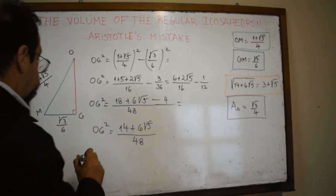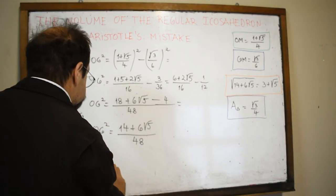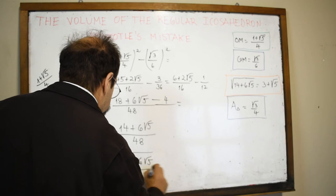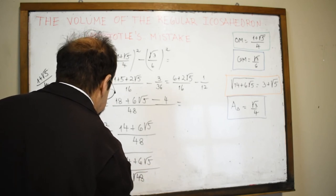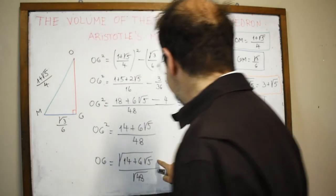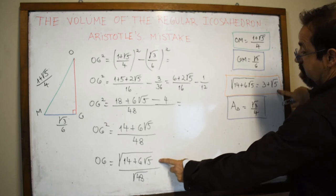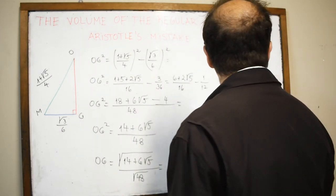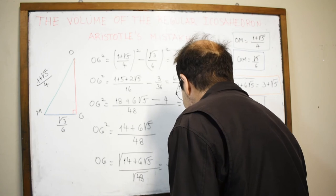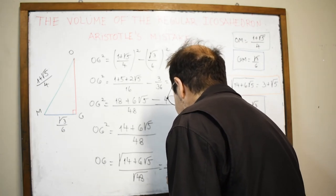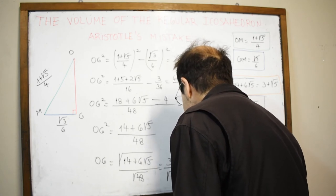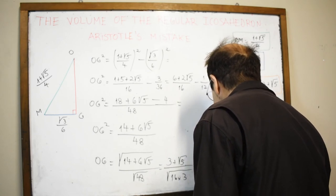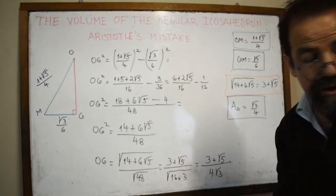We already know that √(14 + 6√5) = 3 + √5. And √48 = √(16 × 3) = 4√3. So OG = (3 + √5) / (4√3).